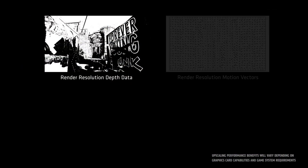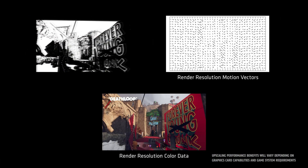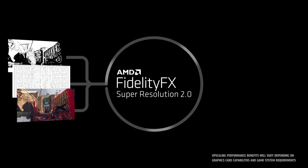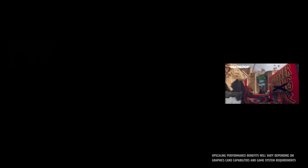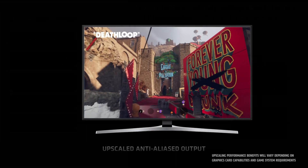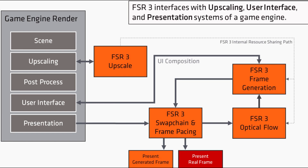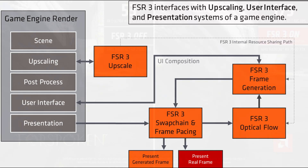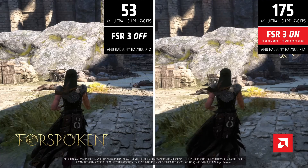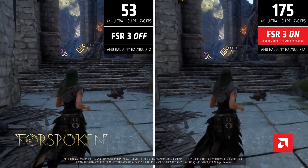FSR, or FidelityFX Super Resolution, is AMD's upscaling tech. When you enable this feature in a game that supports it, the game will lower its internal resolution, then using an algorithm upscale it to a higher resolution to bring that image as close as possible to native, with the benefit of higher performance since you're technically running the game at a lower resolution. Frame generation works just like the name implies — it's essentially framerate interpolation where, between real frames, an algorithm inserts generated frames, making the game appear to run much smoother with more frames per second, even though they aren't technically real frames. When working in tandem with upscaling, you may see a boost of up to double the FPS or even more.